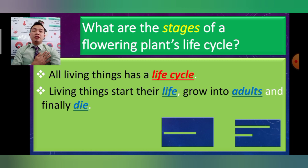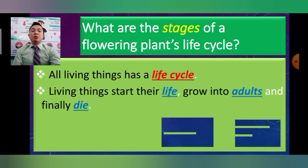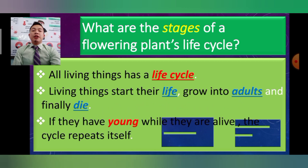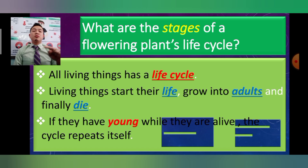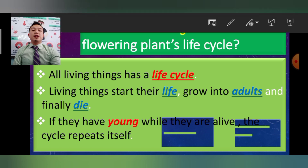Just as we start as a baby, grow into an adult, and finally die, the same happens with a plant. When living things reproduce while alive, the cycle repeats itself. The life cycle will never end — it repeats many times.